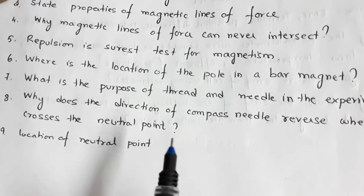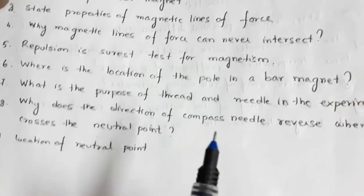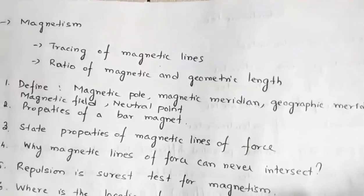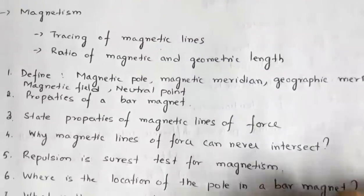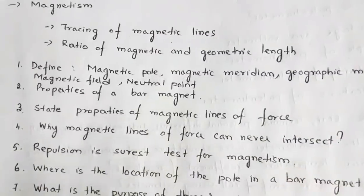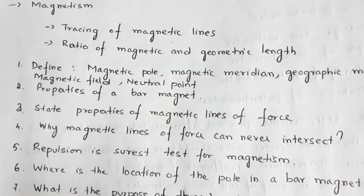You may also be asked to identify the location of the neutral point when the magnet is placed with the north pole facing north, and when it is placed with the north pole facing south. These are a few of the questions that can be asked in your viva examinations. This is just to boost your preparation, so my best wishes for your practical examinations.